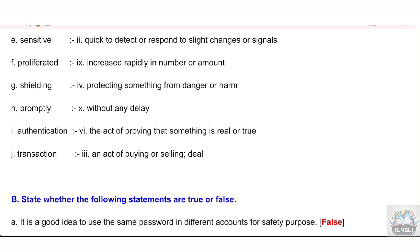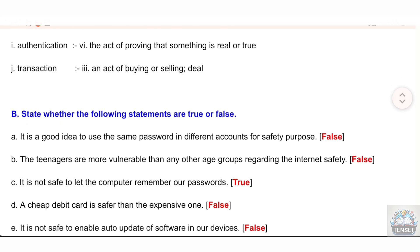J: transaction — an act of buying or selling; a deal. Section B: State whether the following statements are true or false. A: It is a good idea to use the same password in different accounts for safety purposes — False. B: Teenagers are more vulnerable than any other age groups regarding internet safety — False.